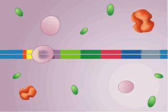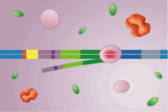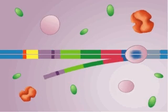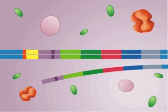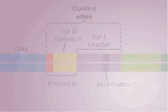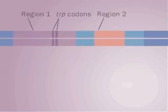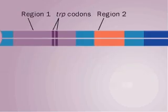Like the lac repressor, the trp repressor does not stick like glue, but periodically dissociates, allowing a low basal rate of transcription. The operon can fine-tune tryptophan synthesis — in essence, it can read various levels of tryptophan concentration in the cell. It uses a system called attenuation to do this.